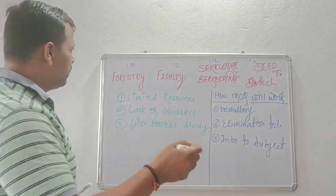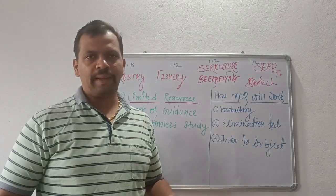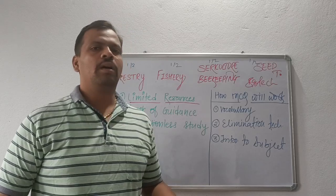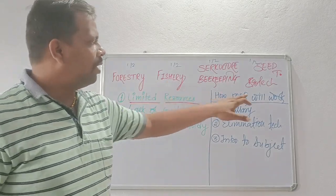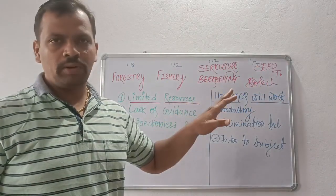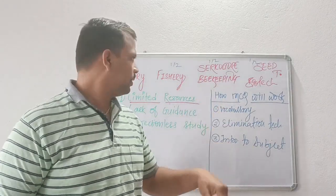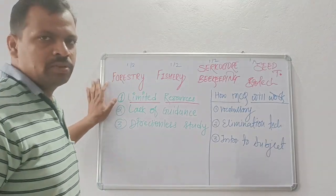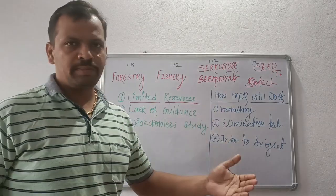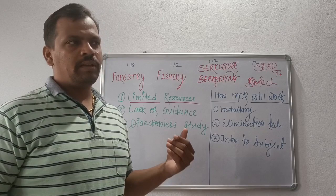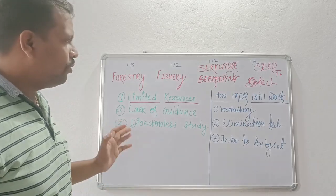We will discuss these subjects on the following points. The first point is that these subjects have limited resources. Most of you are from agriculture, agri-engineering, or forestry and fishery backgrounds. Those who belong to forestry, fishery, or agri-biotech know the subject thoroughly. But for others, there are many specialized books — dendrology, ethnobotany, silviculture — each with a separate book.